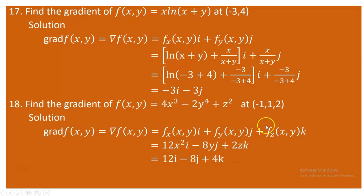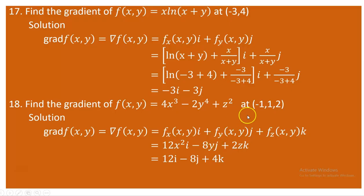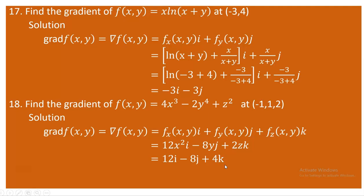Substituting the point (-1, 1, 2): for x = -1, 12(-1)² = 12, so the i-component is 12i. For y = 1, -8(1)³ = -8, so the j-component is -8j. For z = 2, 2(2) = 4, so the k-component is 4k. Therefore, the gradient of f at (-1, 1, 2) is 12i - 8j + 4k.